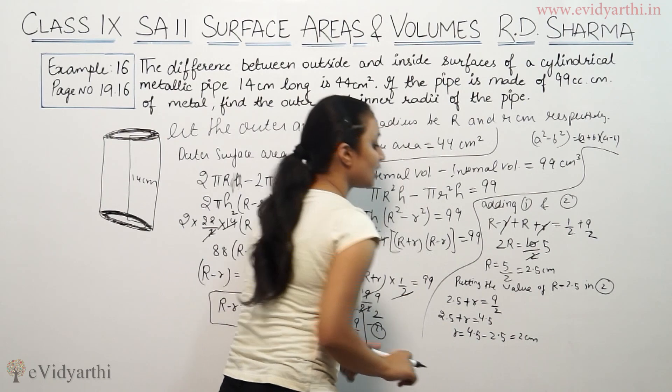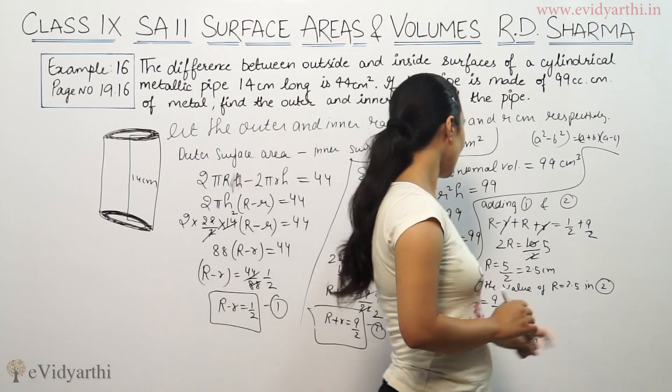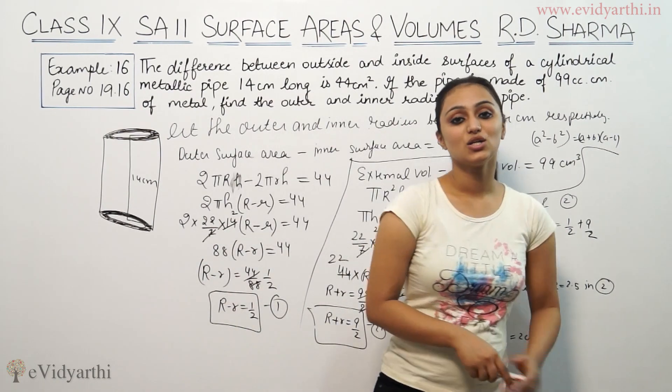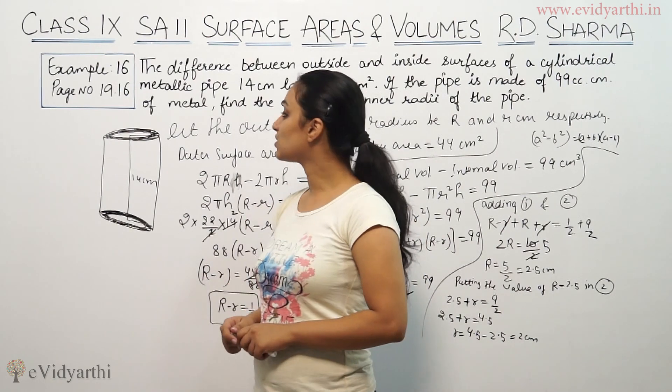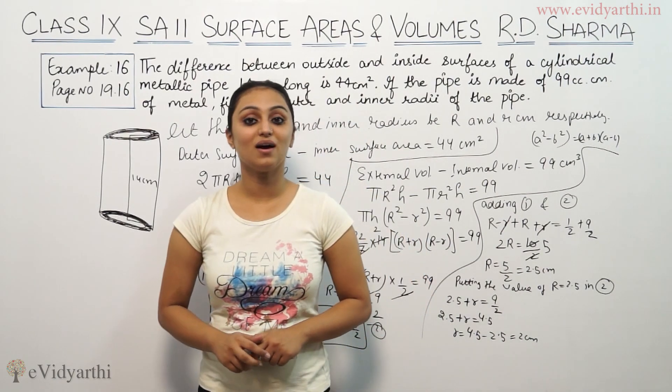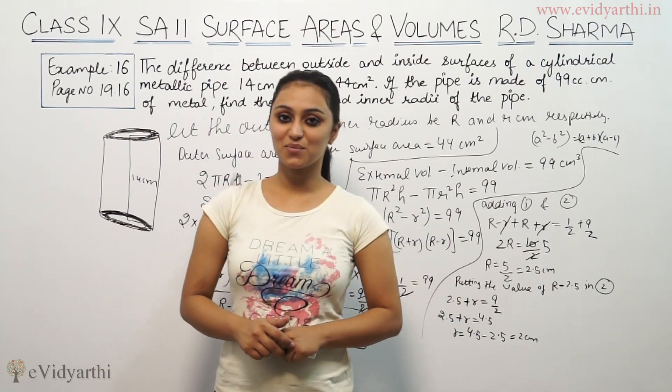This will be 2 cm. So capital R is 2.5 cm and small r is 2 cm. So this was example 16 from R.D. Sharma. Do watch the next video for more questions.